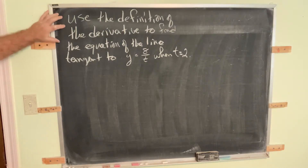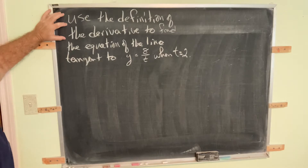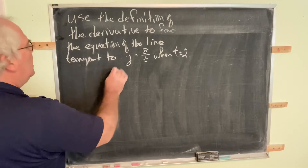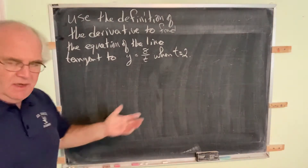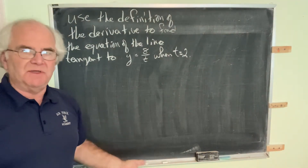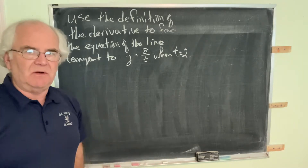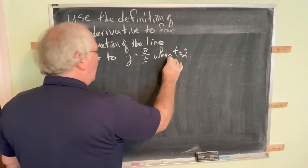Here's our next example. Use the definition of the derivative to find the equation of the line tangent to the curve y equals 8 over t. Note this is a function of t, not x — you should get used to functions of other variables. So find the equation of the line tangent to y equals 8 over t when t equals 2.